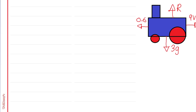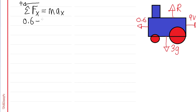Now that we have the free body diagram, let's start to model the system using Newton's laws. Newton's law states that the sum of forces in X equals ma in the X direction. Since this thing is moving forward — in this case left — left will be positive. The sum of forces will be 0.6 (positive, going left) minus 9V (negative, going backwards) equals the mass, 3, multiplied by acceleration.